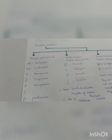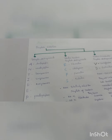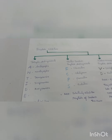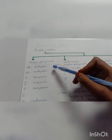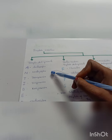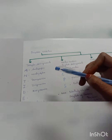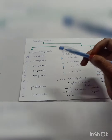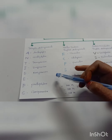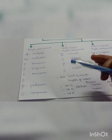Starting with the tricyclic antidepressants — we can remember these drugs with the mnemonic ANTIDEPRESSANTS. A stands for amitriptyline, N stands for nortriptyline, T for trimipramine, I for imipramine, D for desipramine, P stands for protriptyline, and clomipramine.